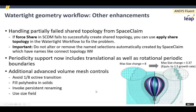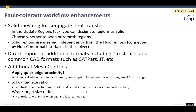You can also fill solids with polyhedra, ensure renaming remains persistent, and make more use of the size field throughout the meshing application. On the fault-tolerant workflow, you've now got more options for solid regions, you can import more file types, and there's more flexibility with mesh controls. This is really for those with very dirty CAD or large assemblies that need wrapping — you'll find that task a lot easier in this release.